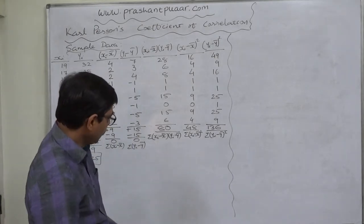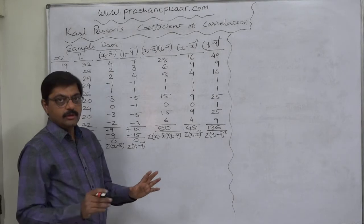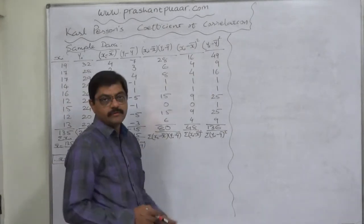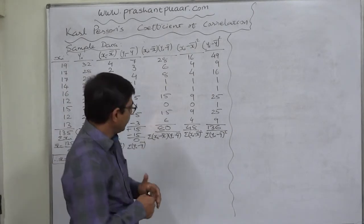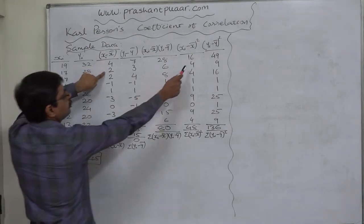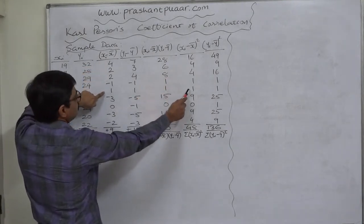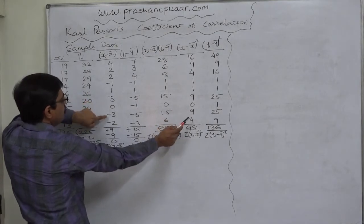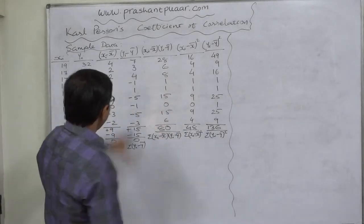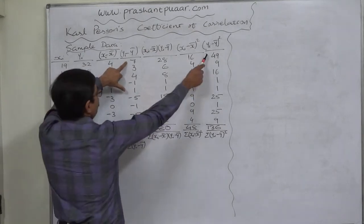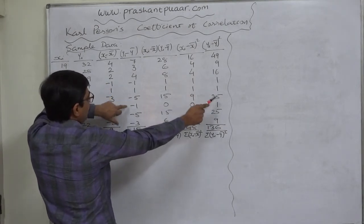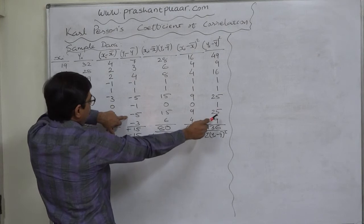To calculate Sx and Sy, the standard deviations of X and Y, we need (X−X̄)² and (Y−Ȳ)². The squared X deviations are: 4²=16, 2²=4, 2²=4, (−1)²=1, 1²=1, (−3)²=9, 0²=0, (−3)²=9, (−2)²=4, summing to 48. The squared Y deviations are: 7²=49, 3²=9, 4²=16, (−1)²=1, 1²=1, (−5)²=25, (−1)²=1, (−5)²=25, (−3)²=9, summing to 136.